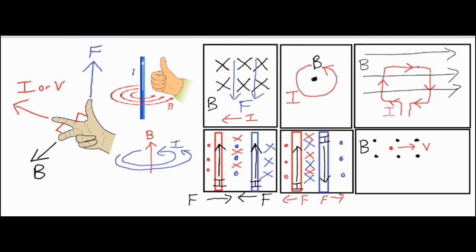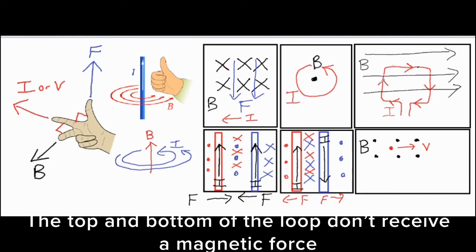For the last two scenarios we have a motor in a magnetic field. The current goes clockwise from our view and the magnetic field goes from left to right. To see which way the motor rotates, we analyze each segment of the wire separately — best to analyze the top portion and then the bottom portion.